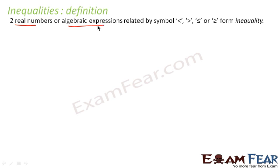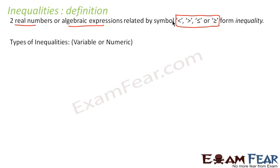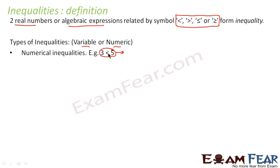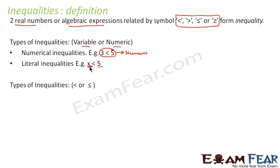Two real numbers or two algebraic expressions, if they are related by symbols greater than, less than, greater than or equal to, or less than or equal to, then it is called an inequality. There are various kinds of inequalities based on whether it involves a variable or numeric value. For example, numeric inequalities have both terms numeric, while literal inequalities have one side algebraic.